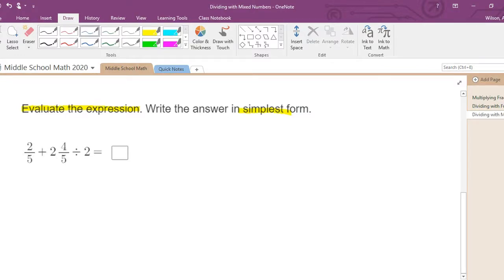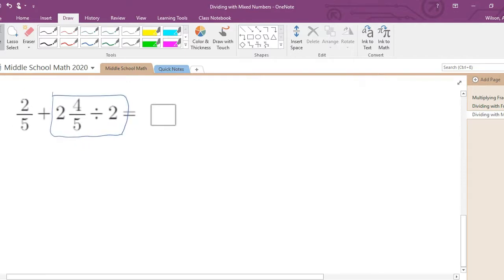So you are staring at two fifths plus two and four fifths divided by two. Well, remember, the order of operations says that you will always do division before addition.